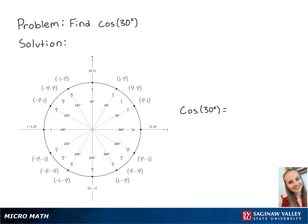For this problem, we're going to find cosine of 30 degrees. Looking at the unit circle, we can see that 30 degrees lies here. Cosine correlates to the x-coordinate on the unit circle. So cosine of 30 degrees is equal to the square root of 3 over 2. And this is the final answer.